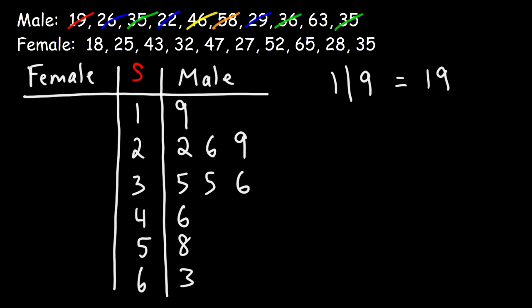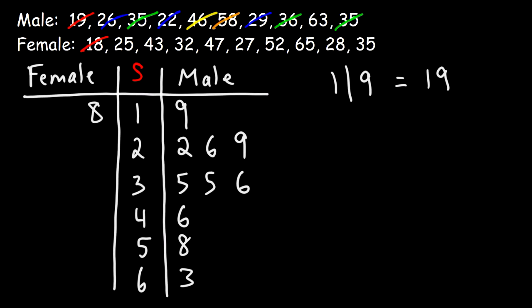Now let's move on to the ages of the females — we're going to use the left side. The first one we have is 18, so all we need to do is put an 8 on the left side. This corresponds to 18. You have to read it this way — it is kind of weird, because typically I'm used to reading things from left to right. So with the side-by-side stem and leaf plot, you also have to read things from right to left. Just keep that in mind.